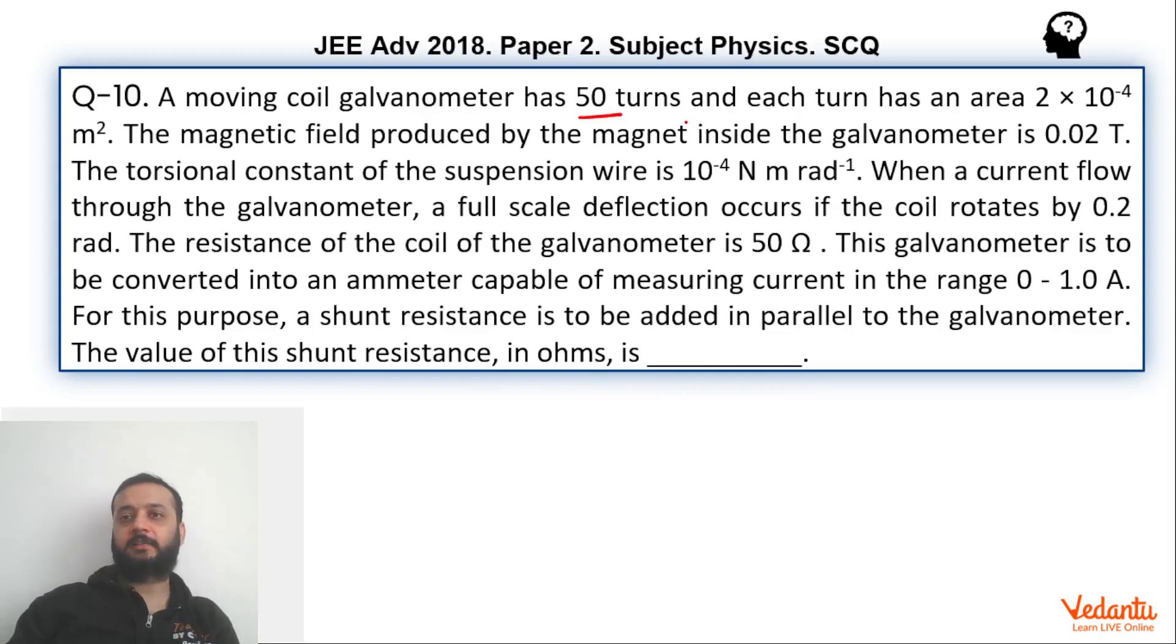Let's see what's happening over here. There is a galvanometer which has 50 turns. The coil has 50 turns, and each turn has an area of 2 × 10⁻⁴ m². When the magnetic field of 0.02 Tesla is produced, then the wire rotates by an angle of 0.2 radians and this is the full scale deflection.